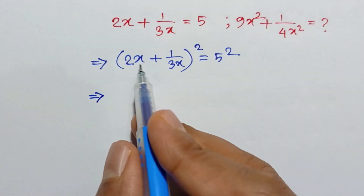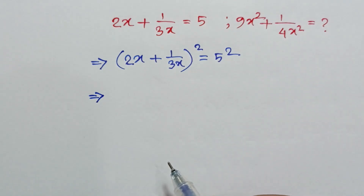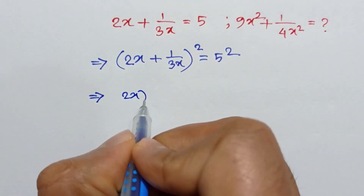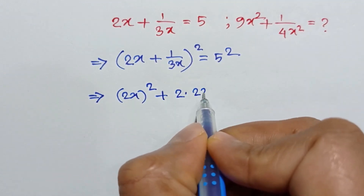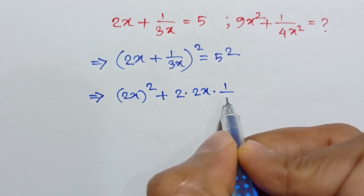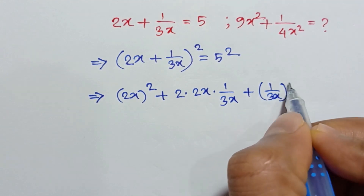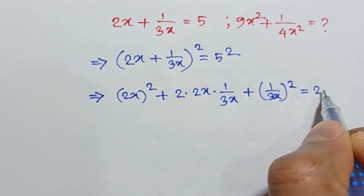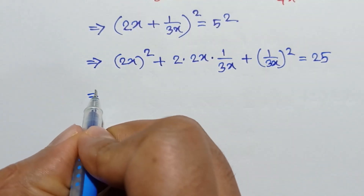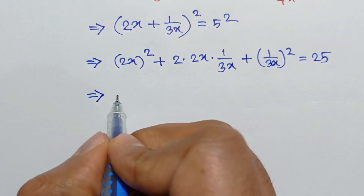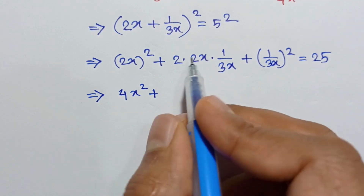According to the formula, a plus b whole square is equal to a squared plus twice ab plus b squared, we can write: twice x whole square, plus 2 times twice x times 1 over thrice x, plus 1 over thrice x whole square, is equal to 25.